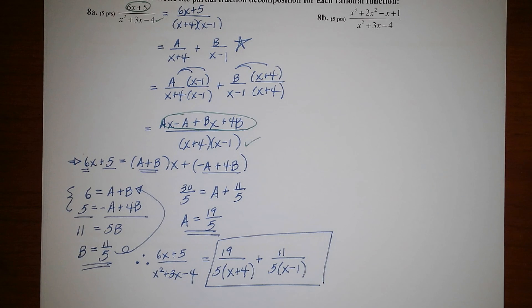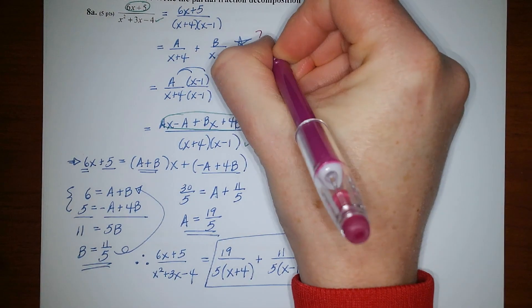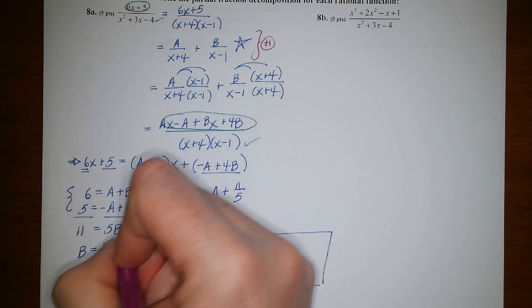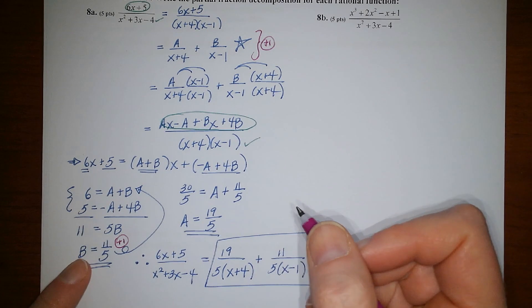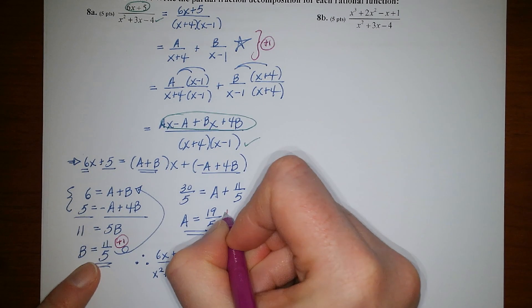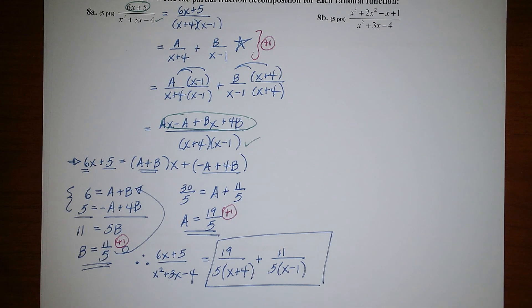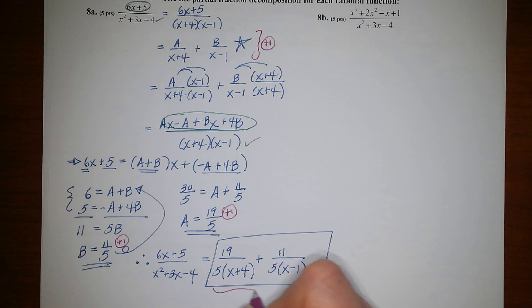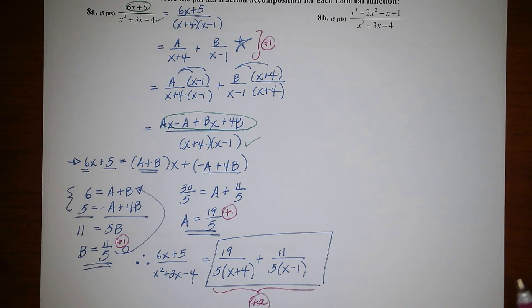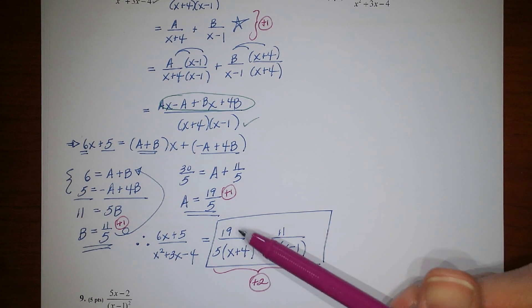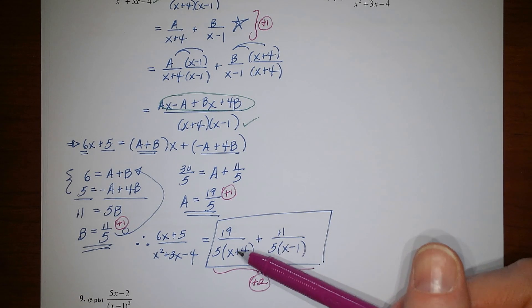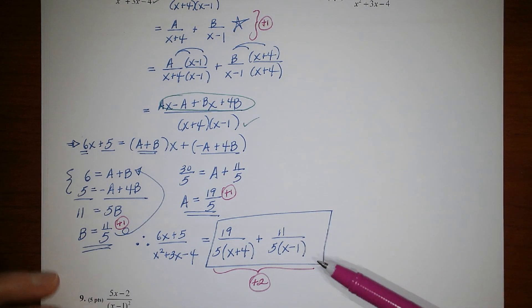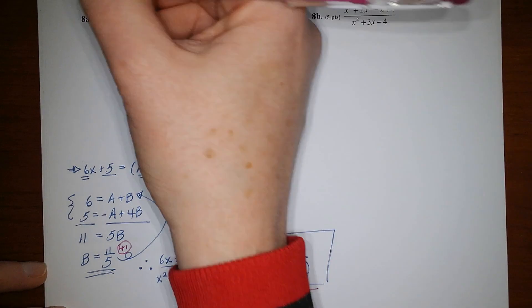So points along the way, if you need some partial credit, will give you one point for getting the form right. And then one point for getting the B value, or actually, well, either A or B equaling 11 fifths. And then the other value equaling 19 fifths. So one point for getting those two numbers for each of those. And then the last two points are for getting the final answer right. Okay. If you didn't clear the compound fractions, like here, if it says 19 fifths over x plus 4, and here it says 11 fifths over x minus 1, then you just take off one point. So there you go. That's your five points for that one.